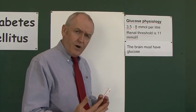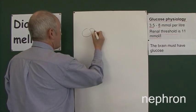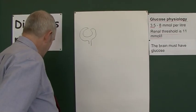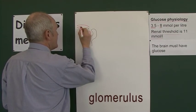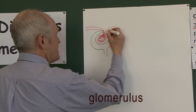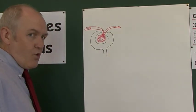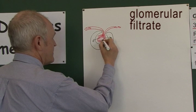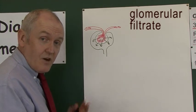Studying the nephron explains a couple of very useful points in diabetes. Here we have the Bowman's capsule of the nephron. The glomerulus is the ball of capillaries inside, supplied with blood by the afferent arteriole taking blood in and the efferent arteriole taking blood out. Small molecules such as water and glucose are filtered through into the glomerular filtrate. Every day something like 180 litres of glomerular filtrate are formed and go into the nephron.